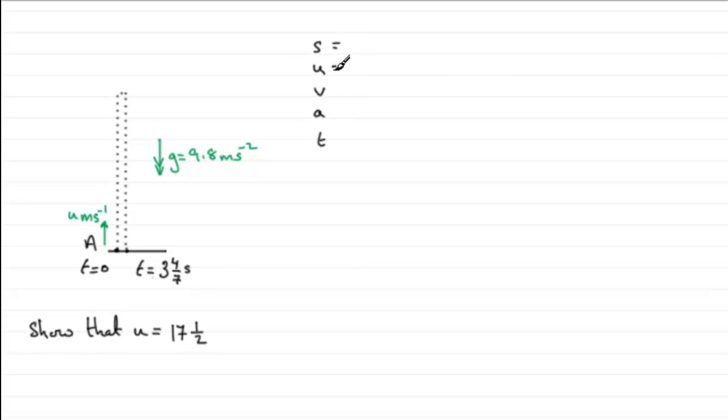S remember is displacement, U initial velocity, V final velocity, A acceleration and T the time. And we need to take a positive sense. And it's always a good idea to take the positive sense in the direction of the initial velocity, which is clearly upwards. So positive is upwards.